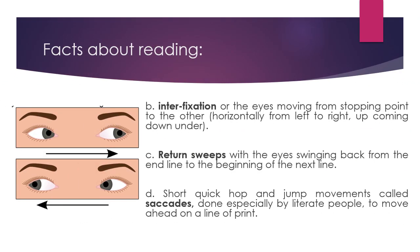The next eye movement is called interfixation — the eyes moving from one stopping point to another, either horizontally from left to right or moving downward to the next line.